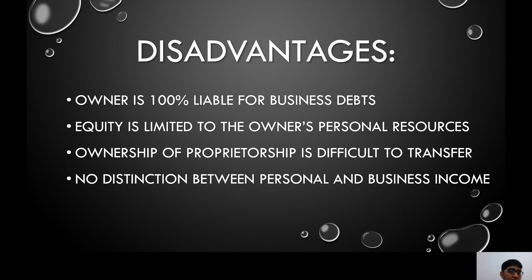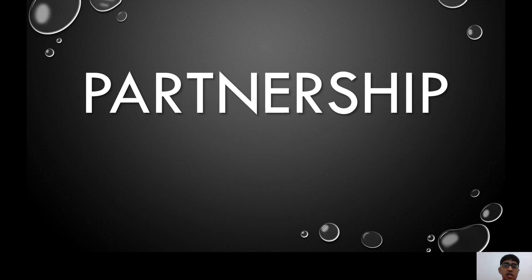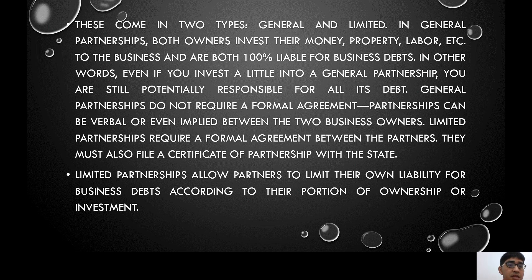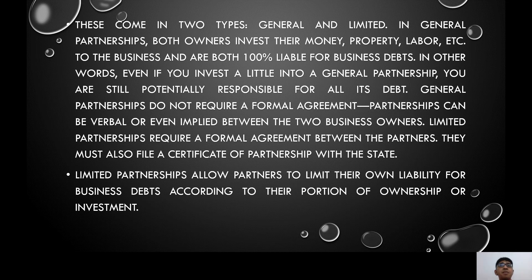Another form of business organization is partnership, which comes in two types: general and limited partnership. In general partnerships, both owners invest their money, property, labor, etc., and are both 100 percent liable for business debts — even if you invest a little, you are still potentially responsible for all its debt. General partnerships do not require a formal agreement and can be verbal or even implied. Limited partnerships require a formal agreement and a certificate of partnership filed with the state, allowing partners to limit their liability according to their portion of ownership or investment.